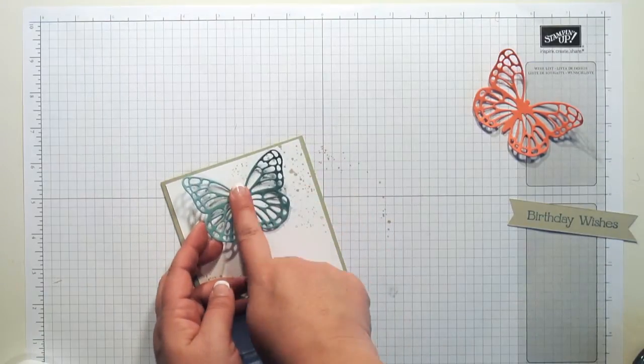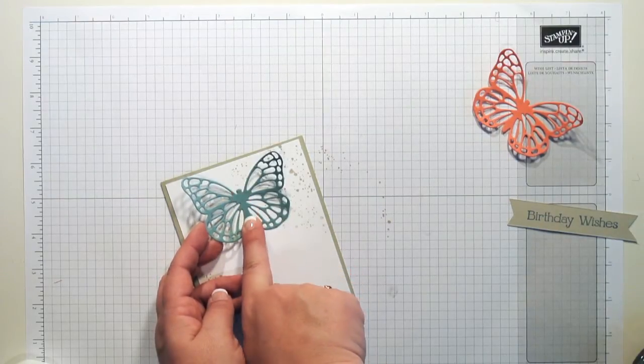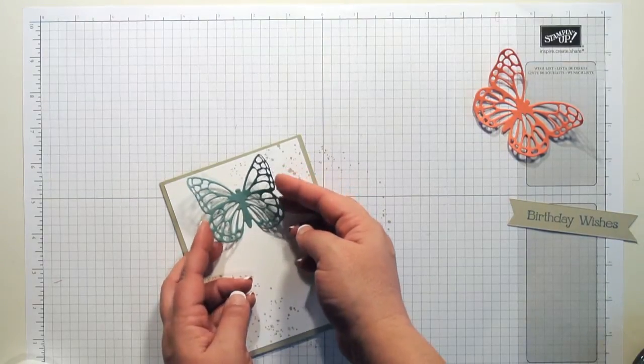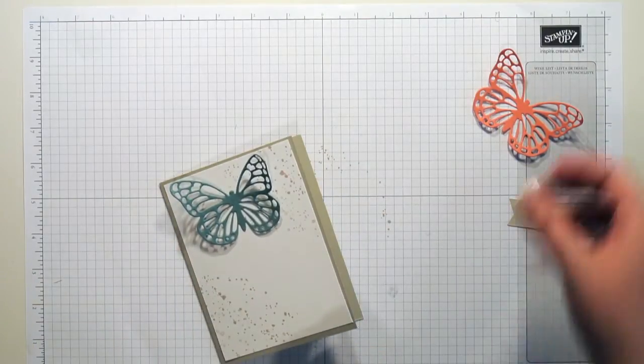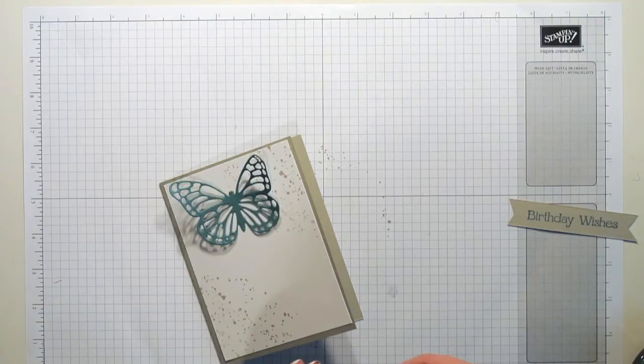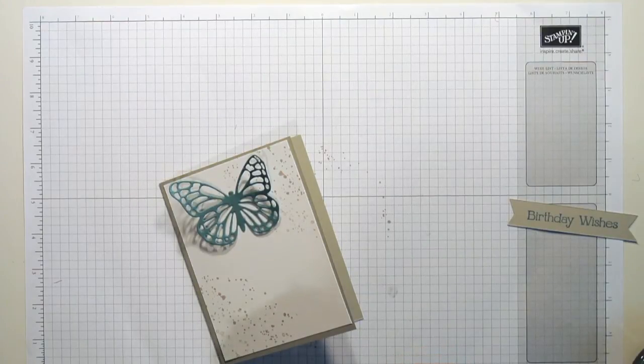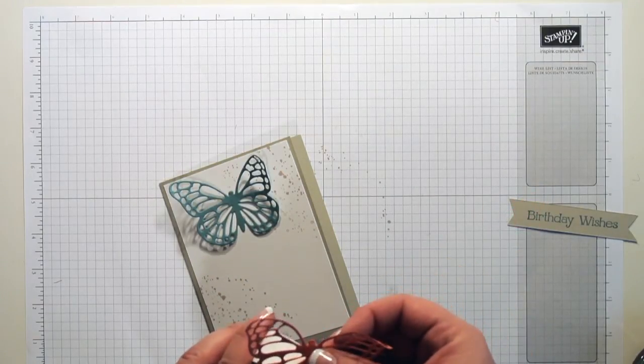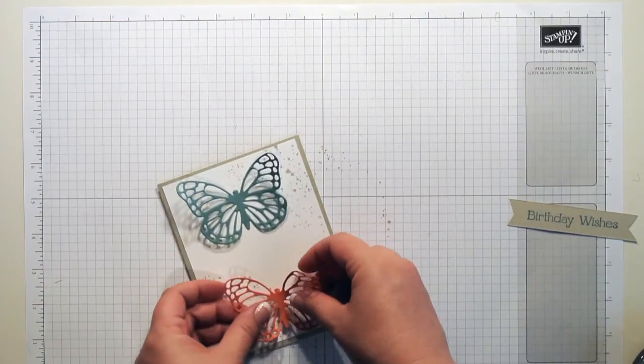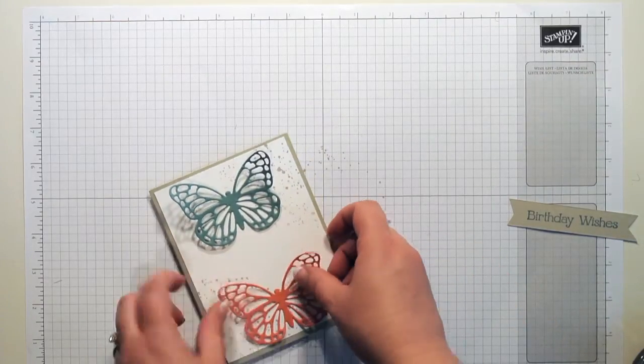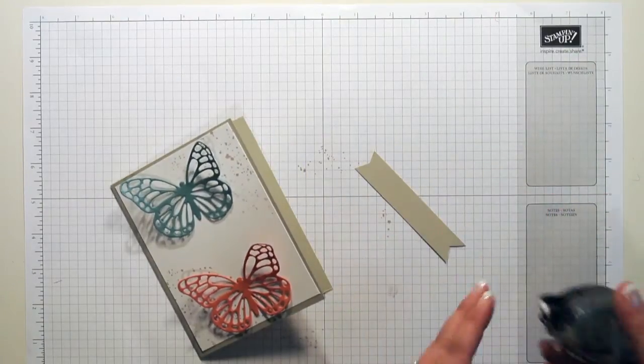And if you see, my glue is only down the middle here because that's the only part that I need to stick. I want these wings to kind of look like he's flying off the page. And then my Calypso Coral one, again, just take my project right to my glue dot. Put him down and he looks like he's flying, and then my greeting.